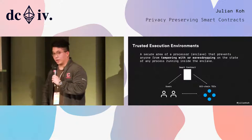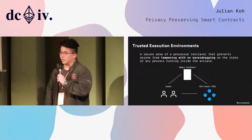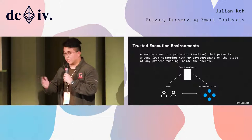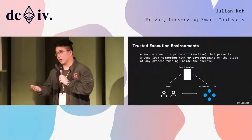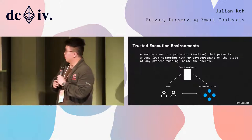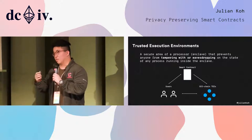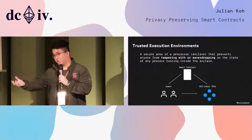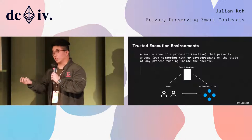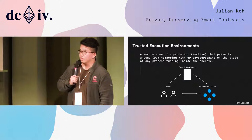The most common enclave today is the Intel SGX chip, which is available in most Intel computers today. Obviously there are some problems, like having to trust Intel that they did not put in a backdoor. But you can think of how it works: a smart contract coordinates users and off-chain trusted execution environment computers — they don't see what you're actually computing, but they help you produce the result. That's the easiest and most practical approach today.